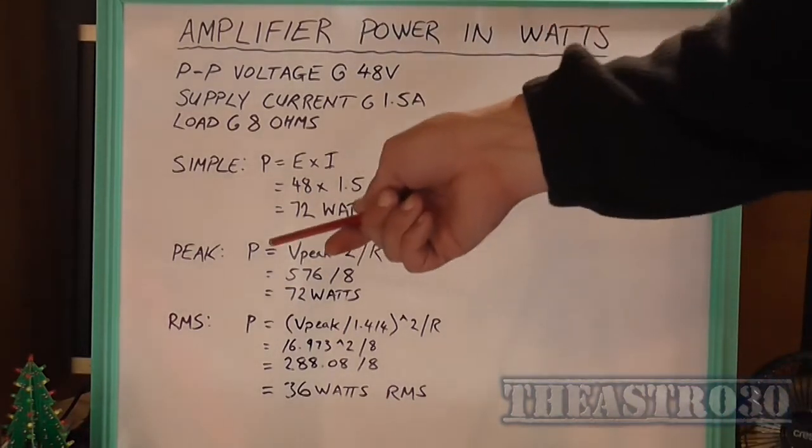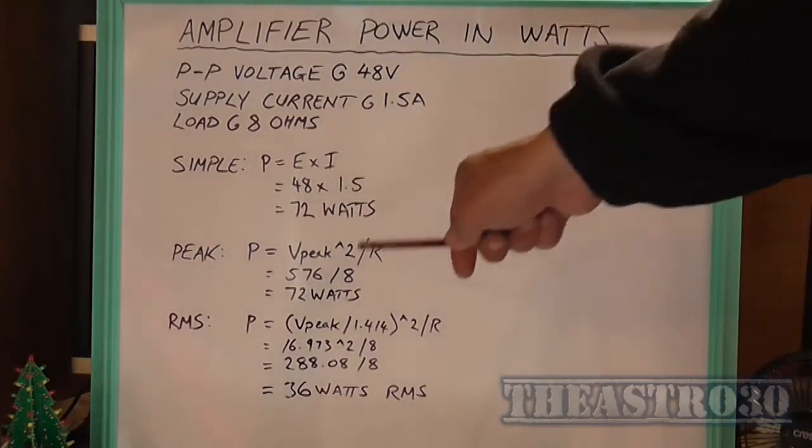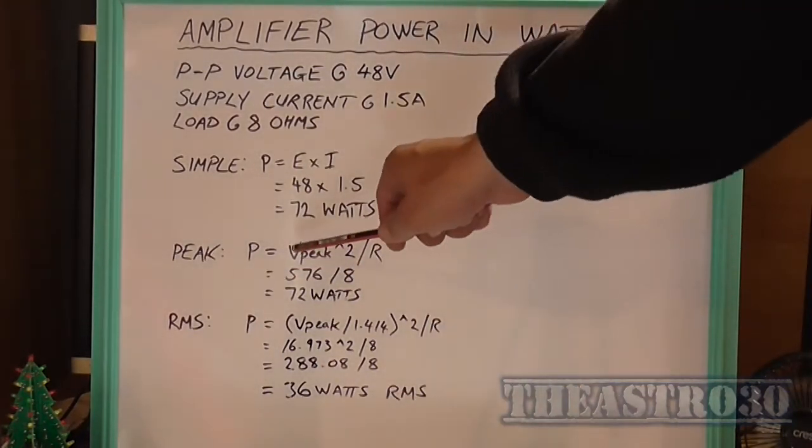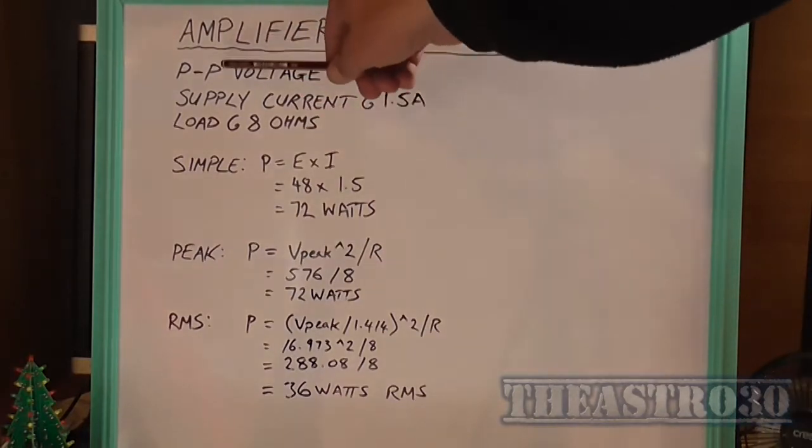The more complicated way of doing it is if you don't know what the current draw is, but you know what the load, the resistance is, you can use V peak, which is different to peak to peak.